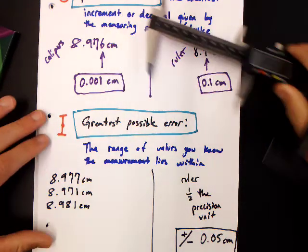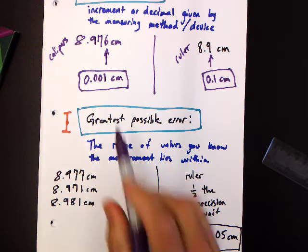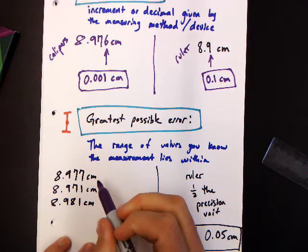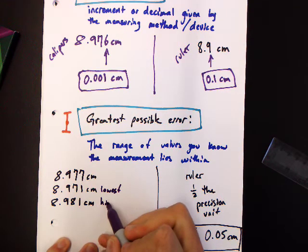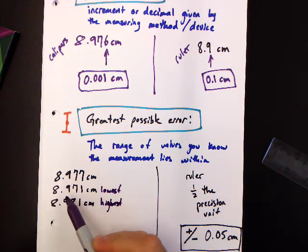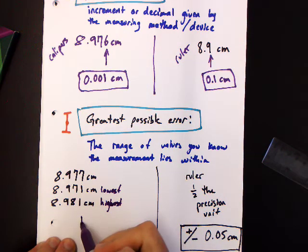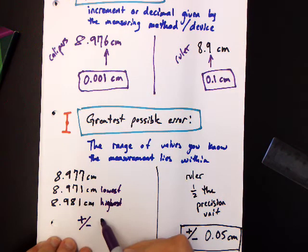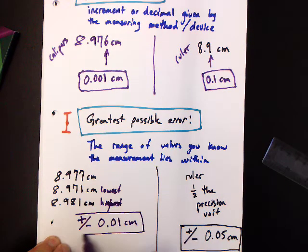8.981. So I've done three measurements, and I can see there's a little bit of a spread. So what's my greatest possible error? The spread here is actually slightly larger than half the precision unit. The spread from my smallest, lowest here, and highest here, is 0.01 centimeters. So this is going to be plus or minus 0.01 centimeters. That is the greatest possible error.